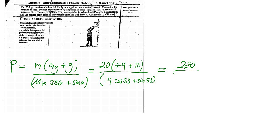So the cosine of 53 is equal to 0.6, so the denominator is going to be 0.24 plus the sine of 53 degrees, which is equal to 0.8.